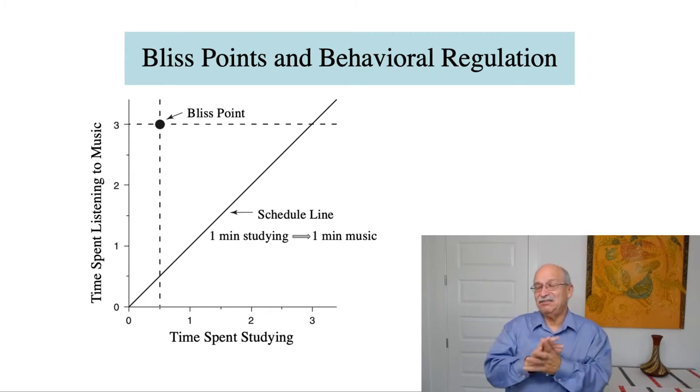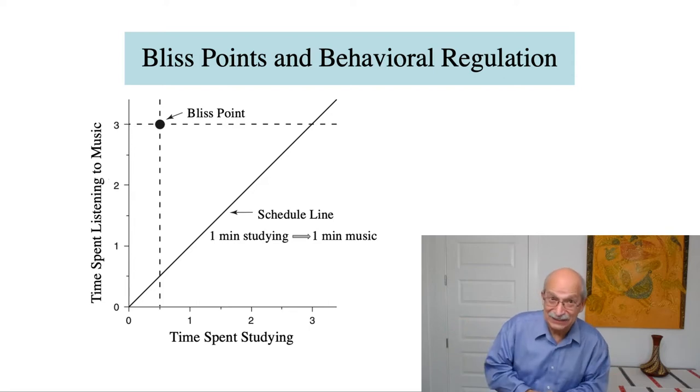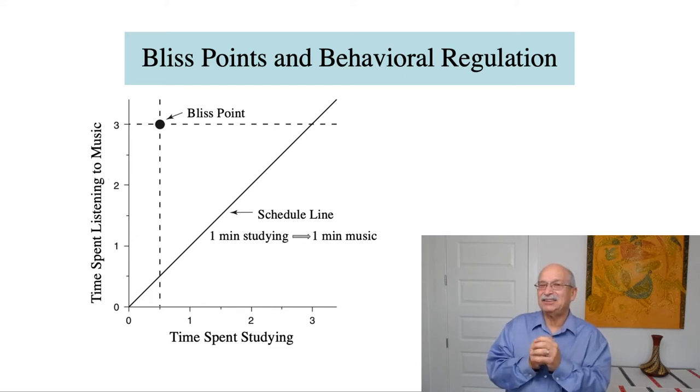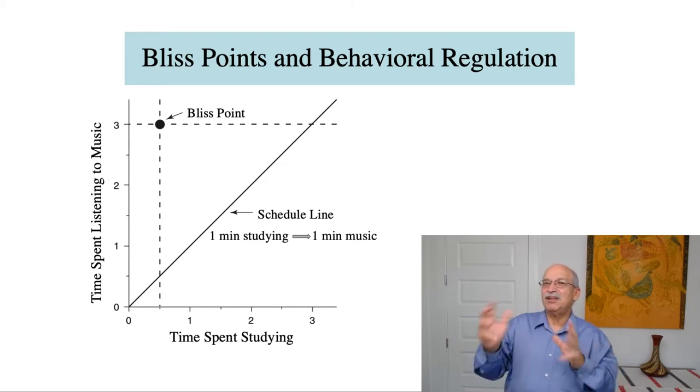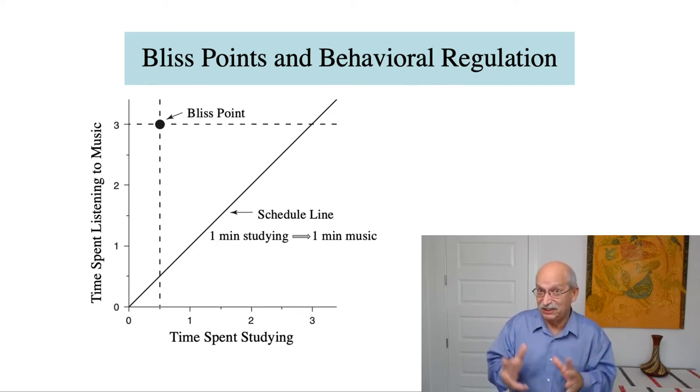So defending the level of time spent on music depends on how much of a cost you're willing to pay. And the same kind of story goes if you try to defend how little time you spend studying. That's going to be at the cost of spending and getting less access to music, and then the question is how much of a cost you're willing to bear. So there are a lot of trade-offs involved, and it turns out economic concepts are really terrific for analyzing these trade-offs.